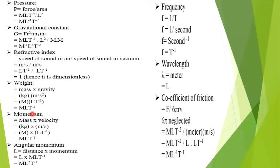We work on momentum. Momentum has the formula mass into velocity. Mass unit is kg and velocity unit is meter per second. The kg symbol is capital M and velocity dimension is LT⁻¹. Solving, we get the final answer MLT⁻¹.